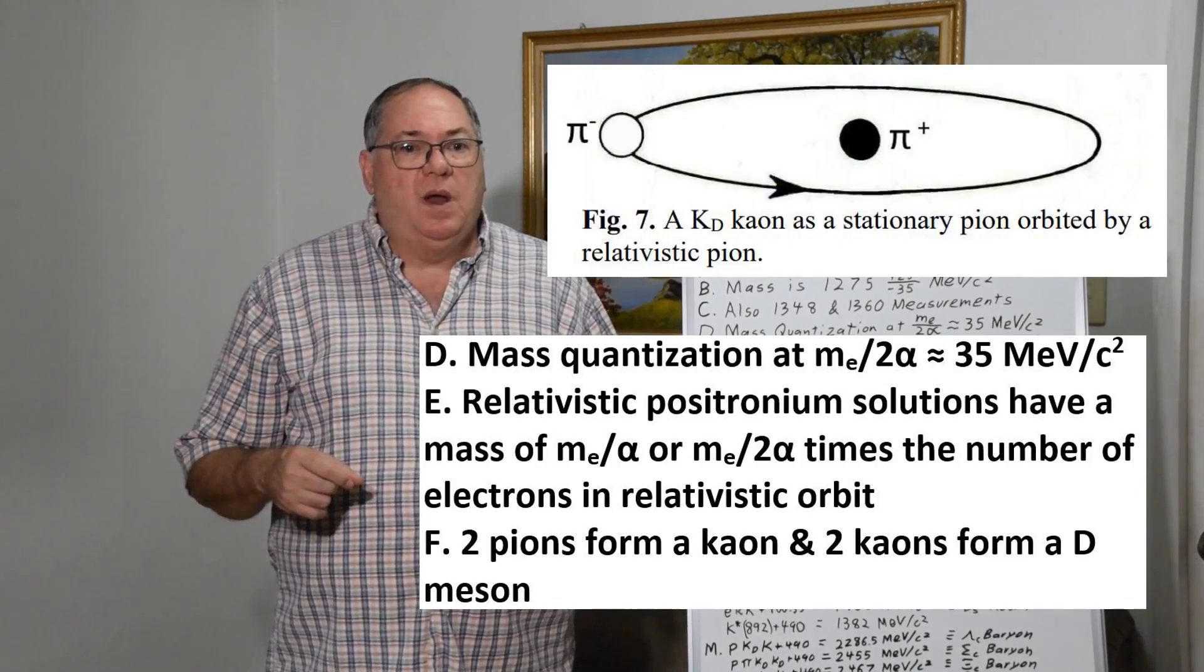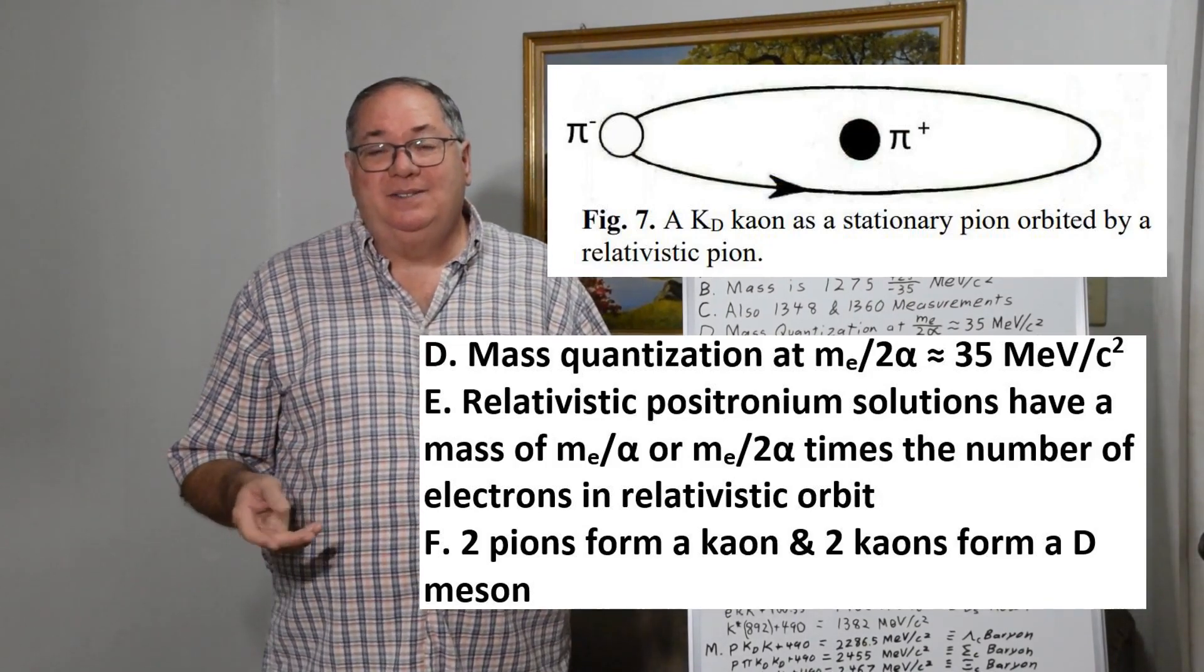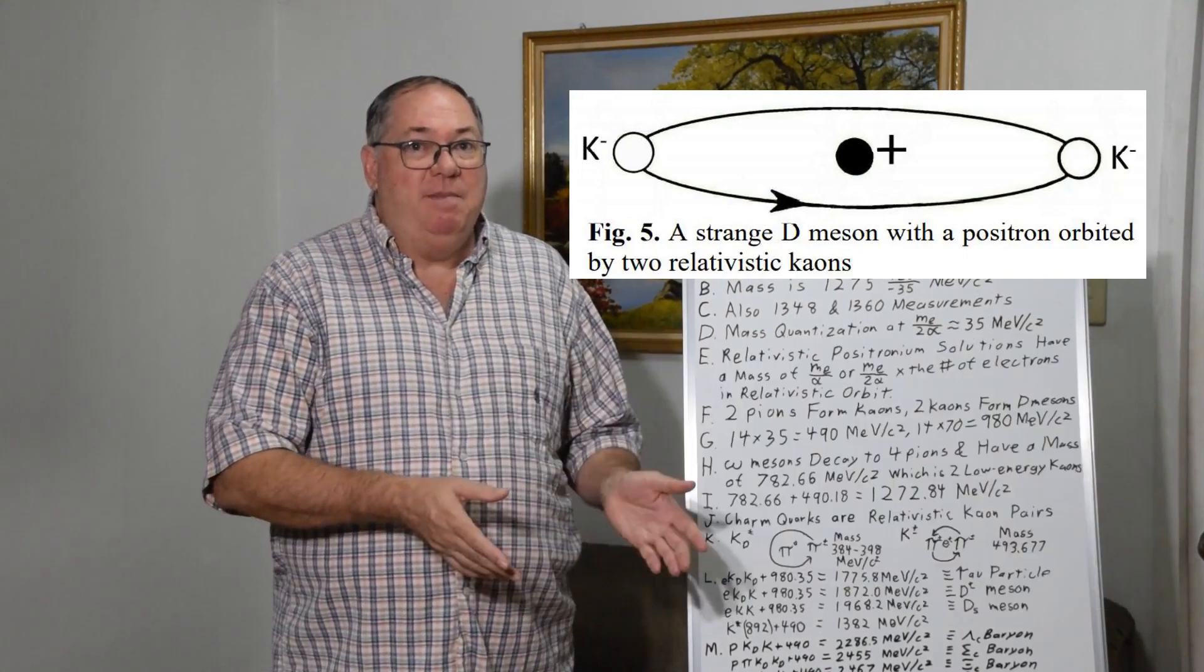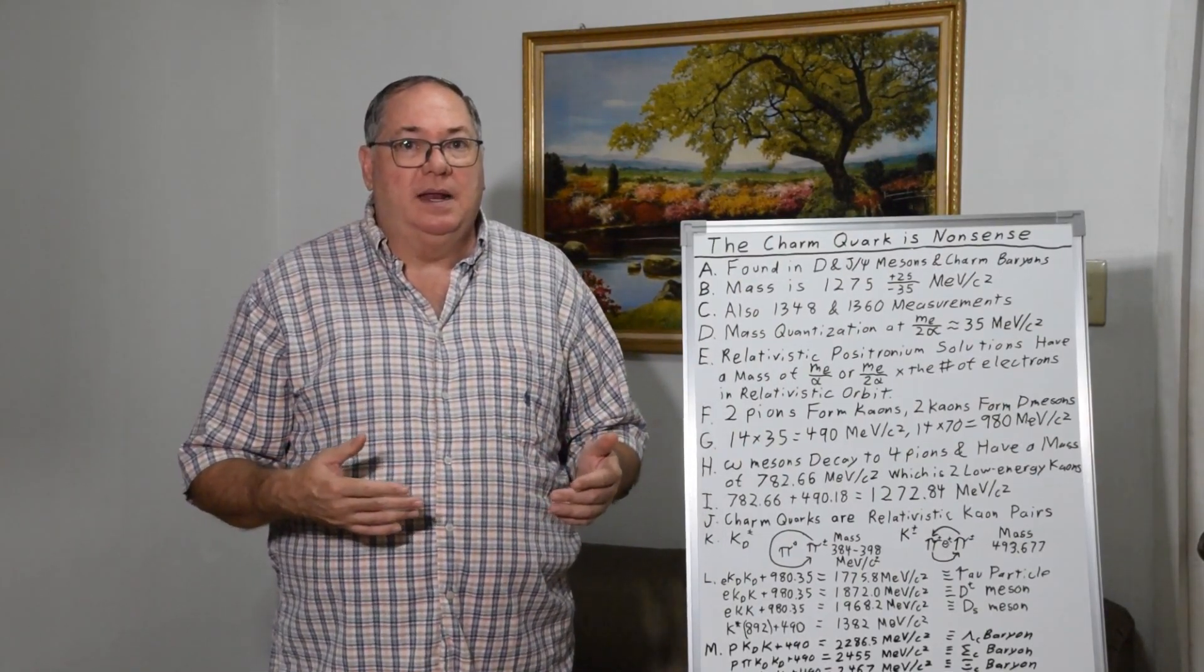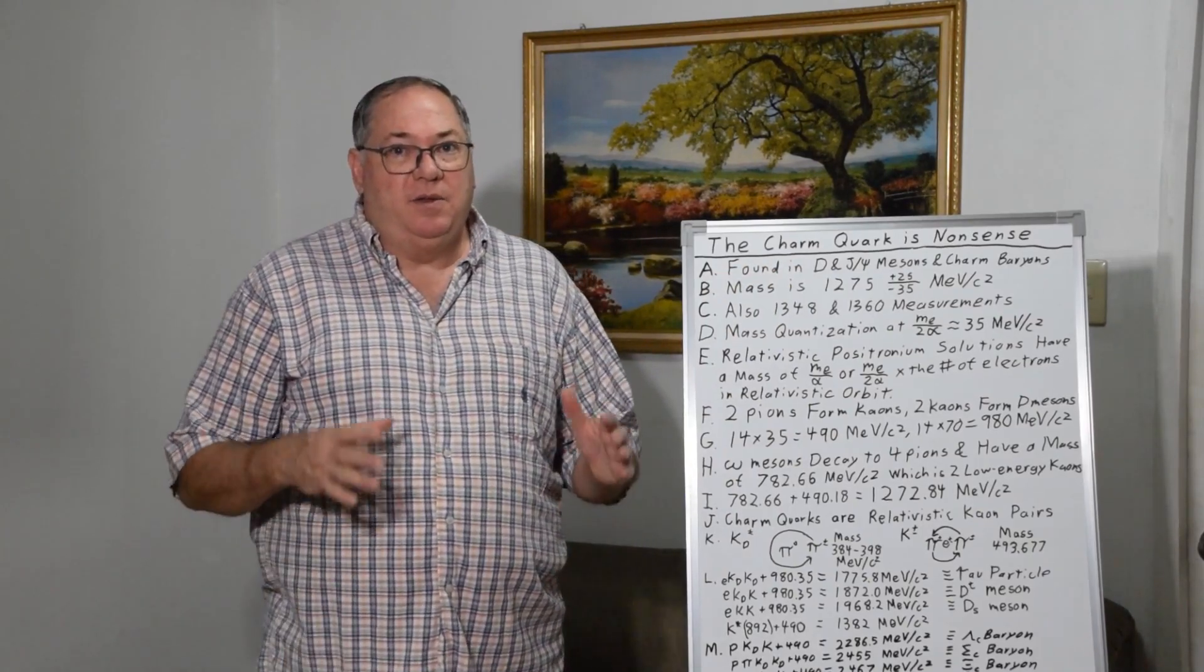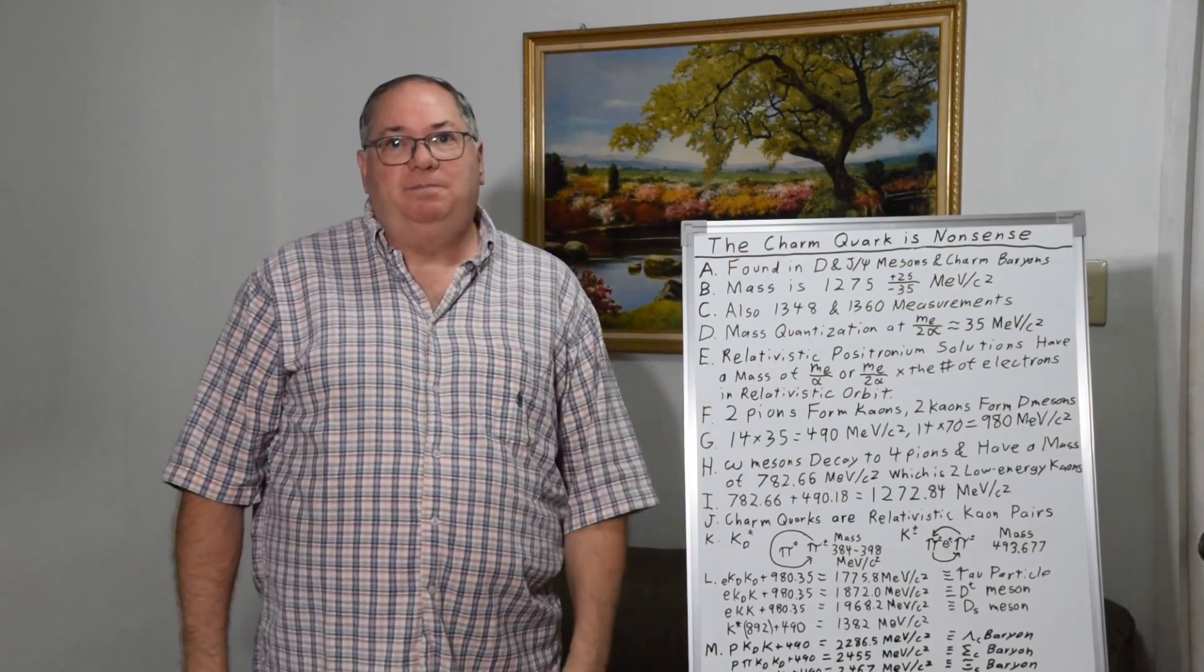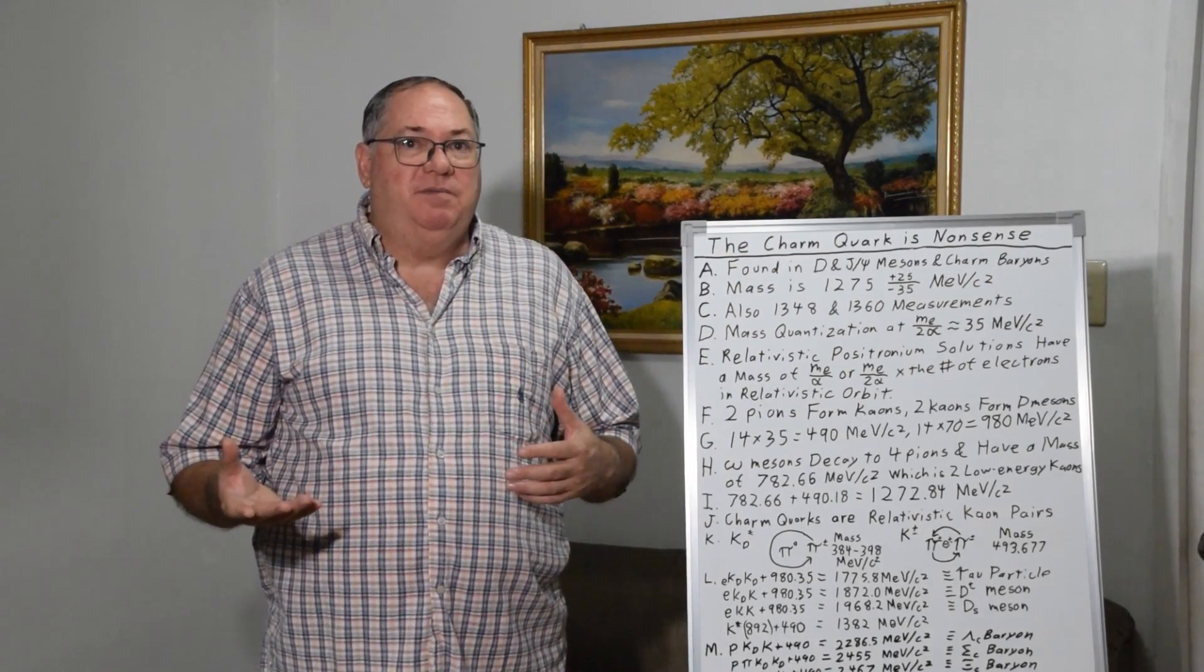And so what we find is that two pions form a kaon, and two kaons form a D meson. And this goes back to looking at the actual decay products. If you look at the decay products in depth, and you have to unscramble them because some are quite complicated, but systematically you see the D meson has two kaons in all the groups. The J/psi mesons have four kaons, and the charm baryons have two kaons. And that's where we start to see a pattern emerging from the decay products.